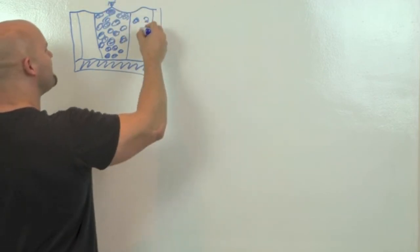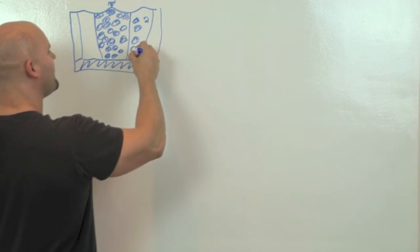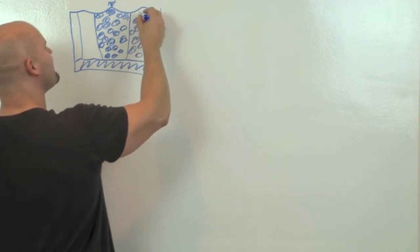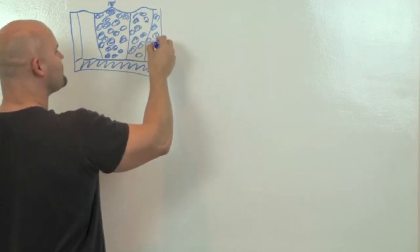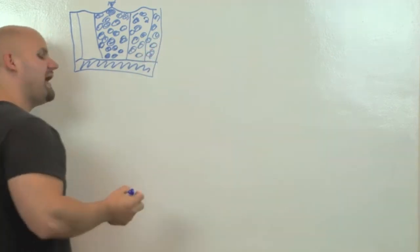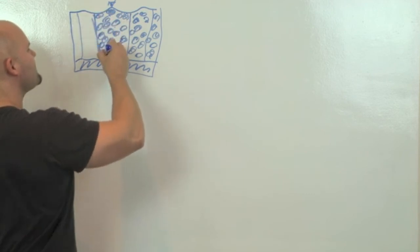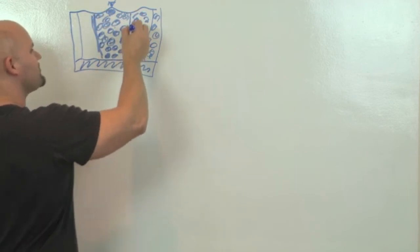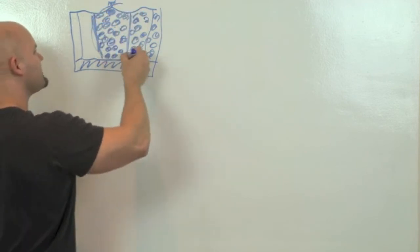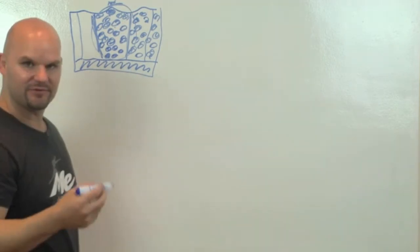And so what happens is you have fat cells building up in here causing this. And so cellulite is really an issue with not just the fat that is building up but also these collagen structures in here that create sort of this pocket effect.